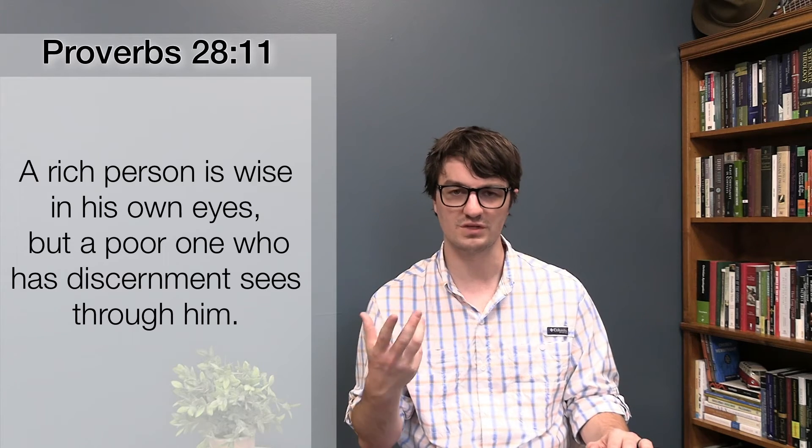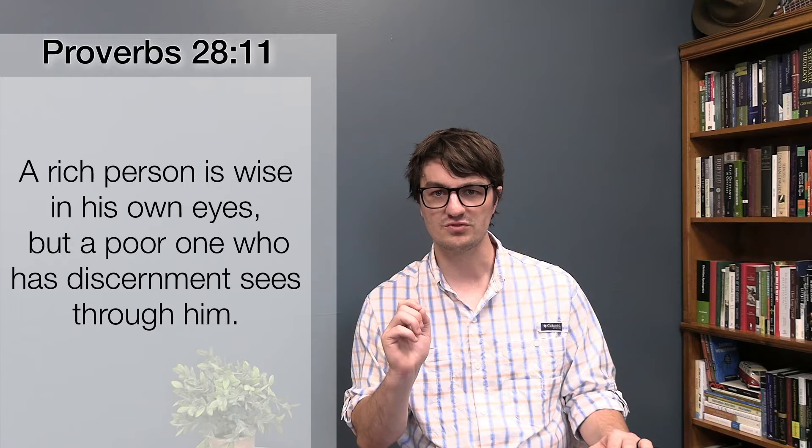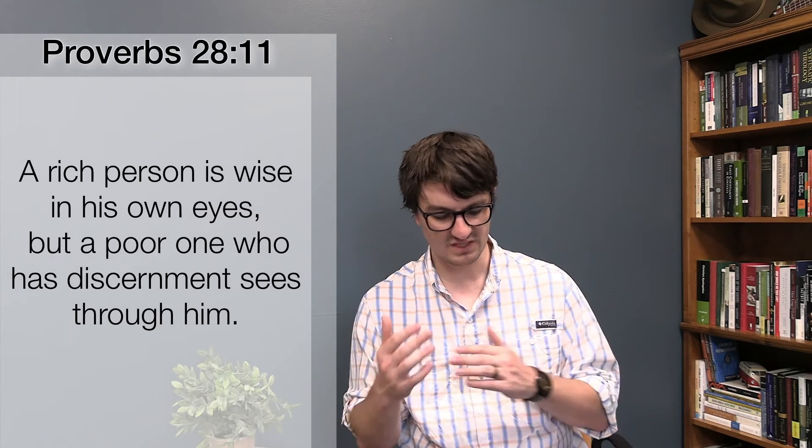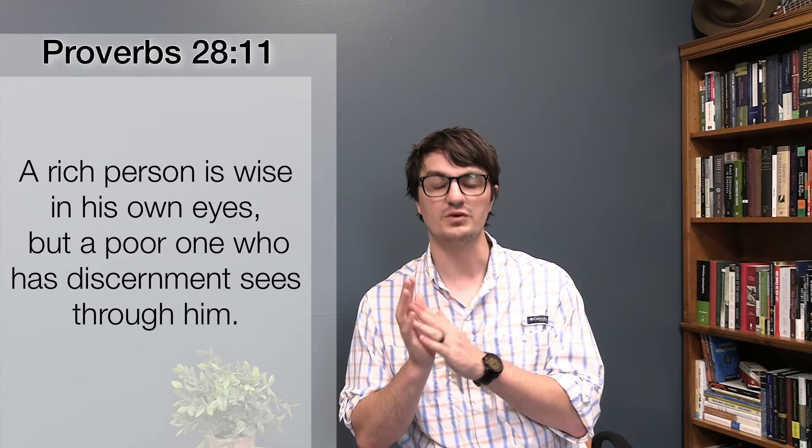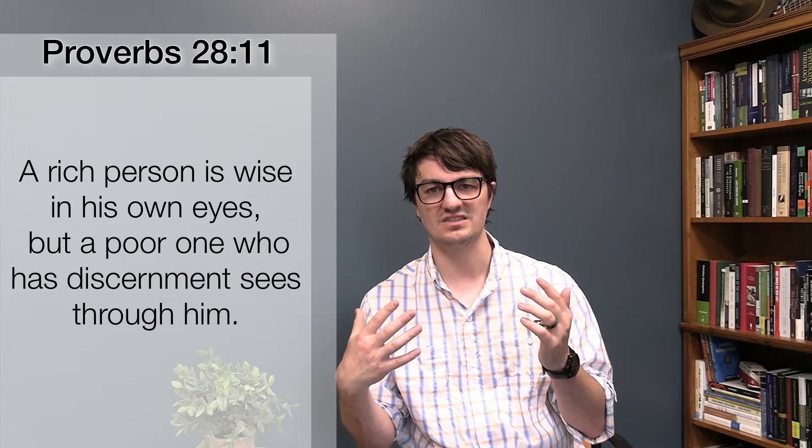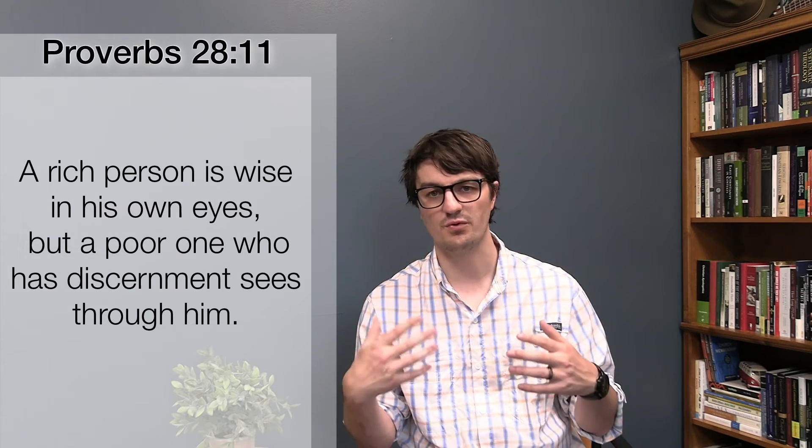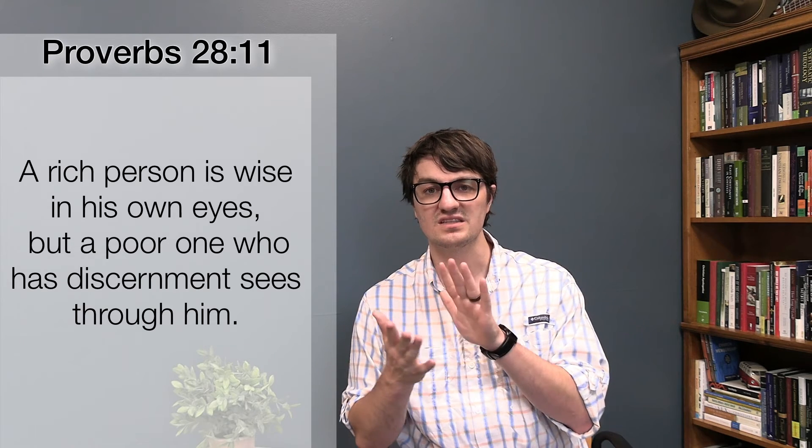Which appears to be what the rich man does not have. And because of that, he is able to see through the rich man. Now, in the context of these proverbs, there's a lot of proverbs here that deal with the idea of rich people who are getting their gains by ill means. And are taking advantage of the poor and things of that sort. So very likely, what this is, is it's a warning.